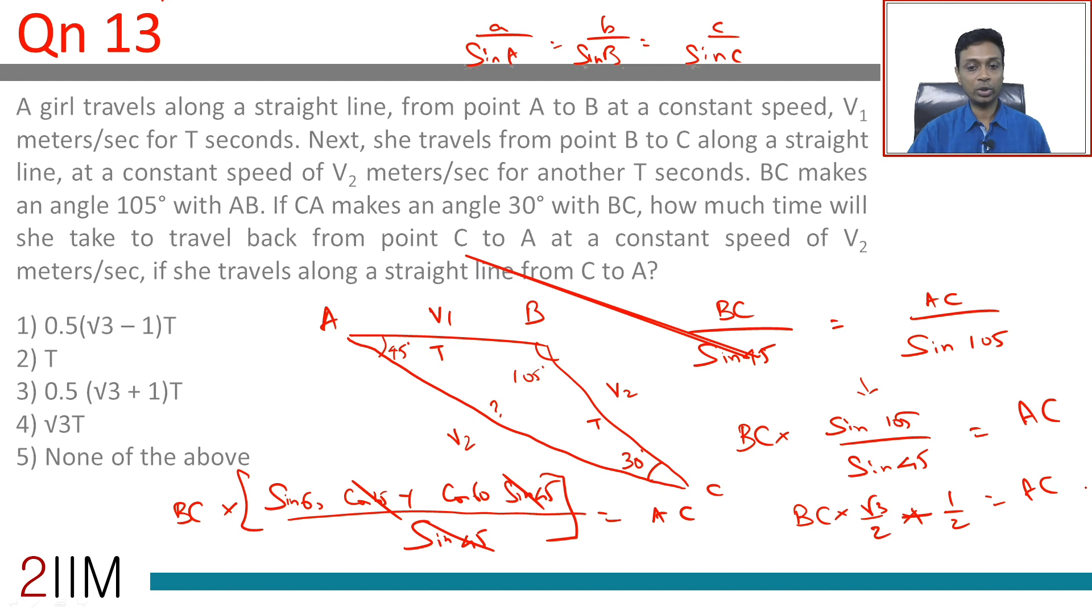So BC is V2 into T. So the time taken would be T into 1 by 2 into root 3 plus 1 or T into 0.5 into root 3 plus 1. 1 by 2 is 0.5, root 3 plus 1 is what we got remaining.